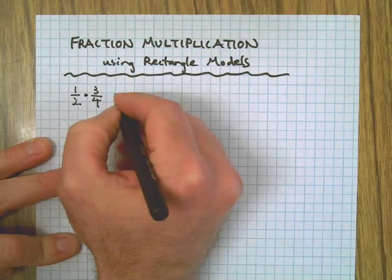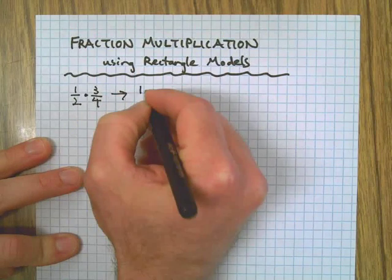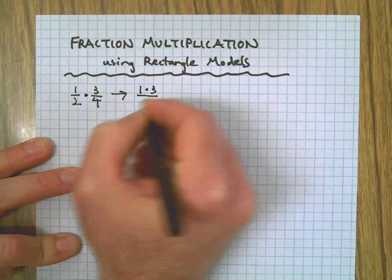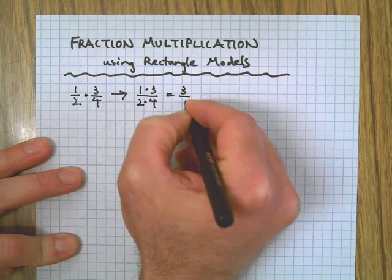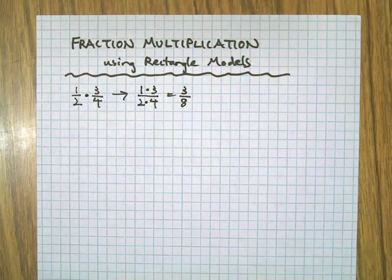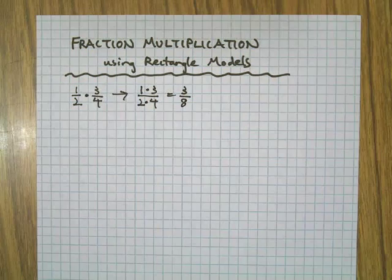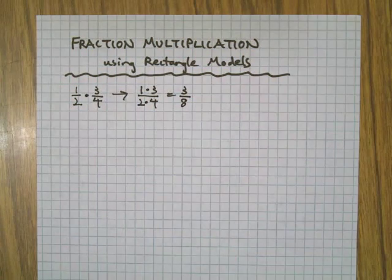You would do something like this: you would go, oh, one times three on top of two times four, and you would get your answer. Great, you're happy, choose C, and you're correct. But what's actually happening here?